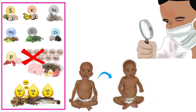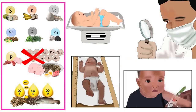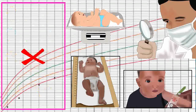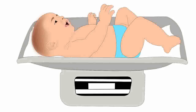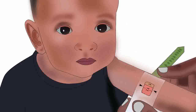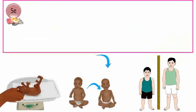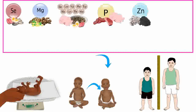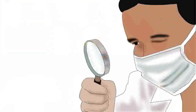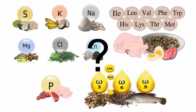Diagnosis and treatment of a type 2 nutrient deficiency is difficult. There is only one way to diagnose any type 2 nutrient deficiency: it is to measure and track the weight, height and mid-upper arm circumference. However, this will only help in detecting growth failure, which is caused by every type 2 nutrient deficiency. It is difficult to determine which specific nutrient the body is deficient in.